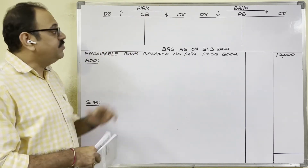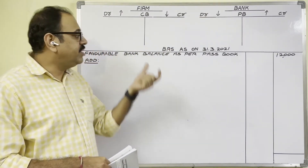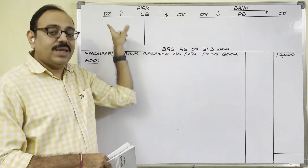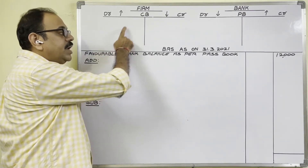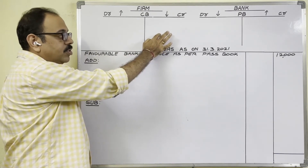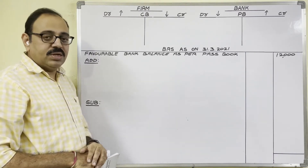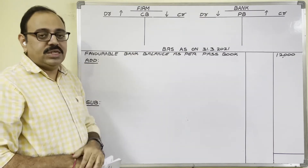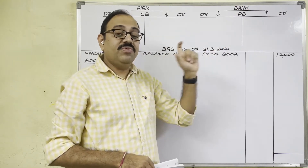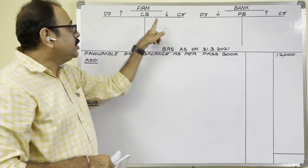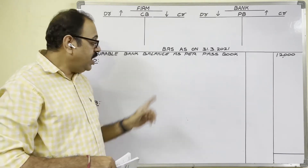Remember these rules: the firm prepares the cashbook; the bank prepares the passbook. If there is any transaction between firm and bank, the firm records it in the cashbook and the bank records it in the passbook. If any amount is debited in the cashbook, it will be credited in the passbook, and vice versa. For favorable balance: if a transaction increases the firm's bank balance, it is debited in the cashbook and credited in the passbook. If it decreases the bank balance, it is credited in the cashbook and debited in the passbook.